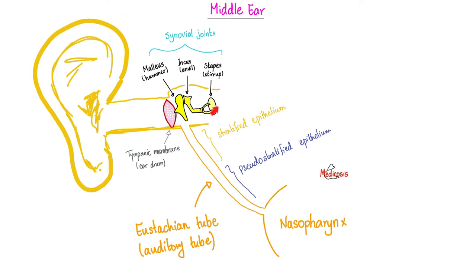Then we have the middle ear — three small bony ossicles: the malleus, the incus, and the stapes, or the hammer, anvil, and stirrup, respectively. If you do not know what a stirrup is, that's because you're a snowflake born yesterday — not to mention the hammer and the anvil.